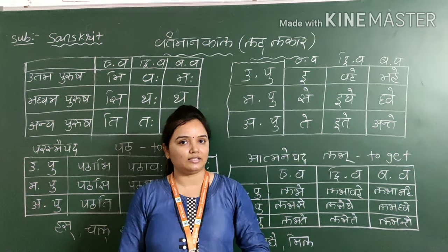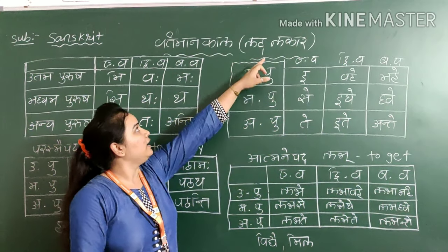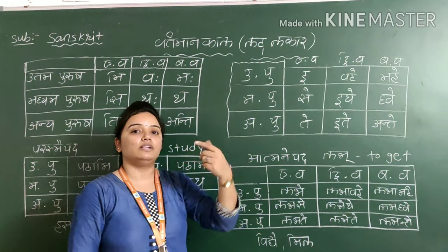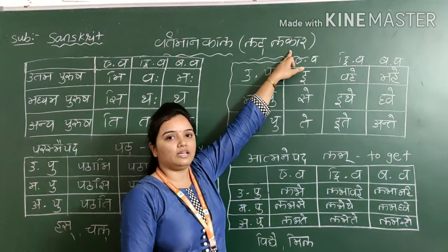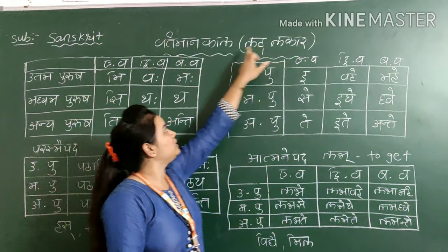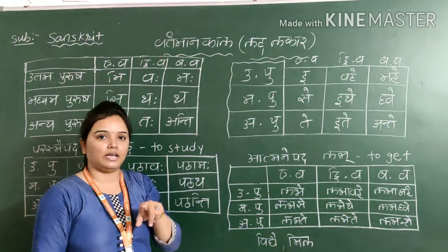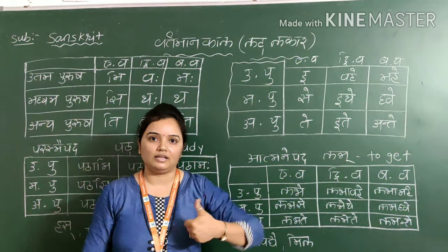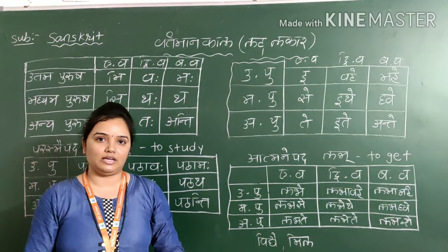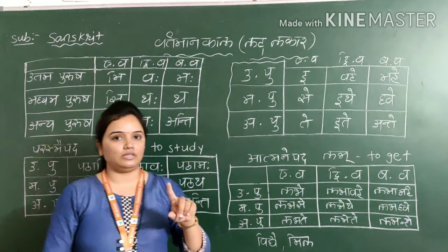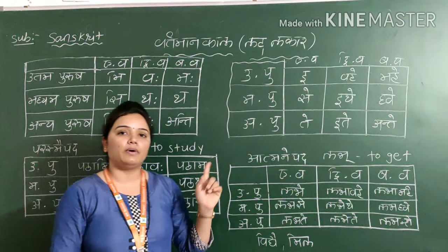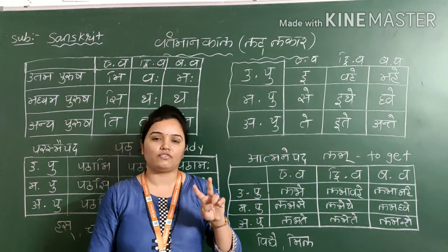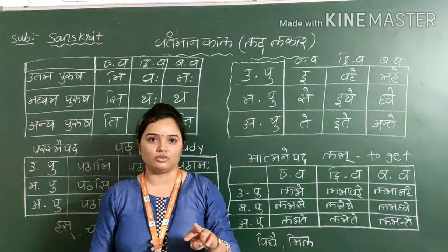So friends, let's see the Vartaman Kaal — it means the Lat Lakar. Vartaman Kaal means present tense. In Sanskrit language, tenses are called Lakar. Lakar means tense, and Lat Lakar means Vartaman Kaal, present tense. Now see the table of Lat Lakar. Vartaman Kaal is divided into two parts: first one is Atmanepad and second one is Parasmapad. So we will see two different tables today and frame them.